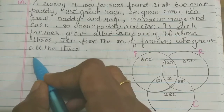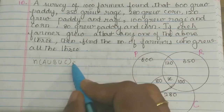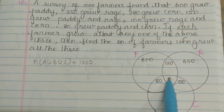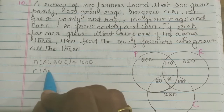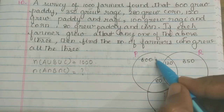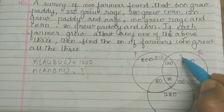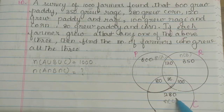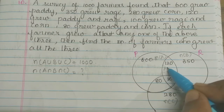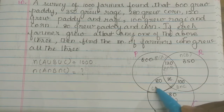So if we look at 1000, n of A union B union C equals 1000. Then n of A intersection B intersection C is what we need to find. So 600 is n of A, 350 is n of B, and 280 is n of C. 120 is n of A intersection B, 100 is n of B intersection C, and 80 is n of C intersection A.